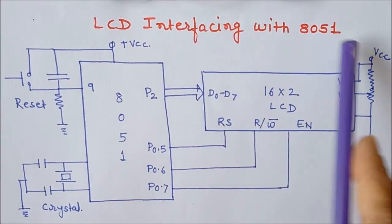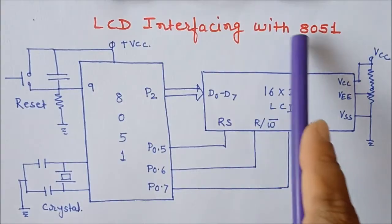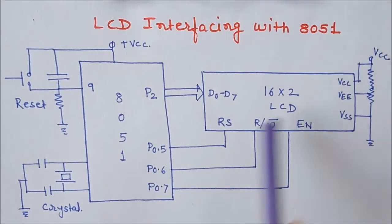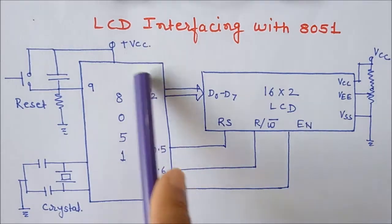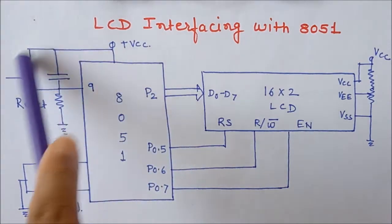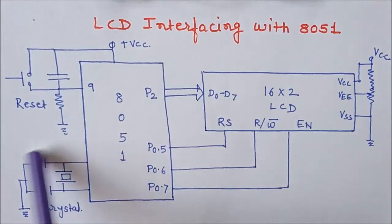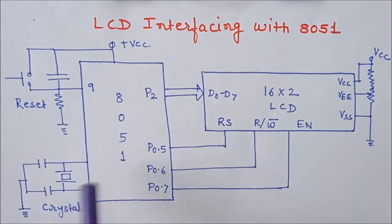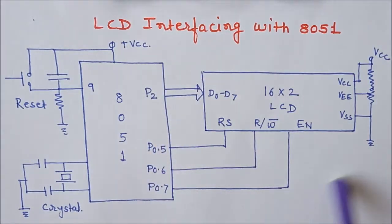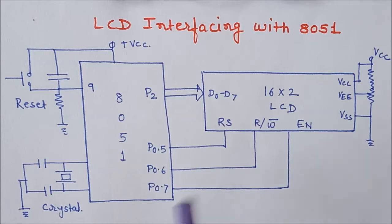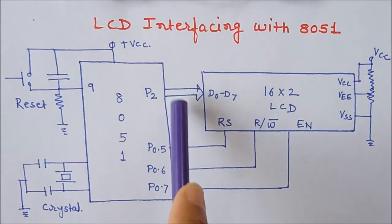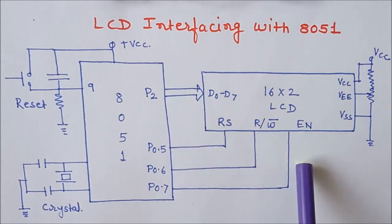We are looking at interfacing an LCD with the 8051 and will write an assembly language program to display a string on the LCD. Here the 8051 is shown with its reset circuit and crystal oscillator circuit. This is the main interfacing part of the LCD, and as seen in the previous video, the LCD has different signals.